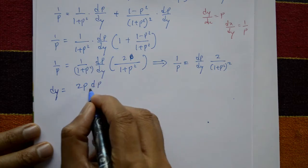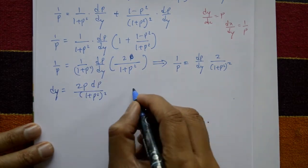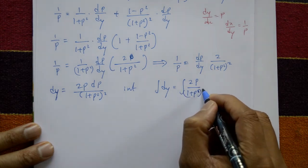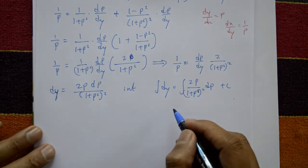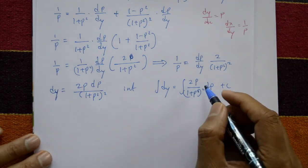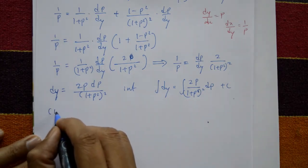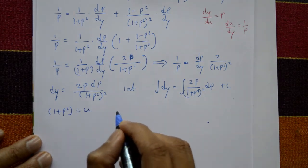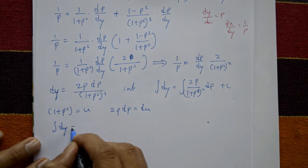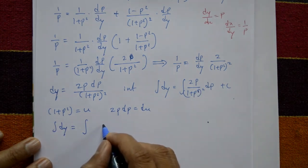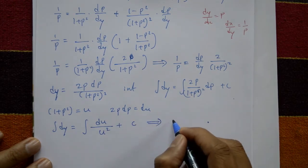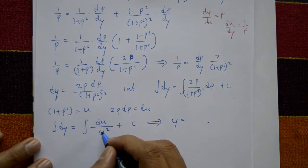Integrating both sides: ∫dy = ∫2p/(1 + p²)² dp + C. Use substitution: let u = 1 + p², then du = 2p dp. Substituting: ∫dy = ∫du/u² + C = ∫u⁻² du + C. After integration: y = -1/u + C, which means y = -1/(1 + p²) + C.